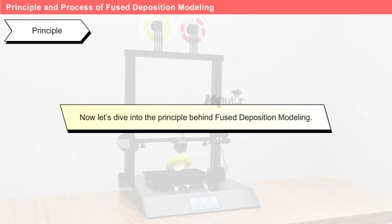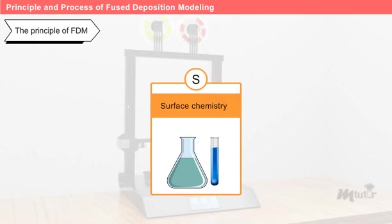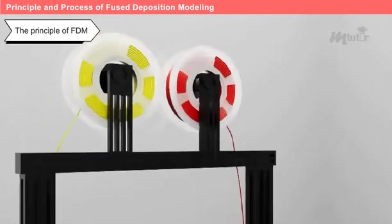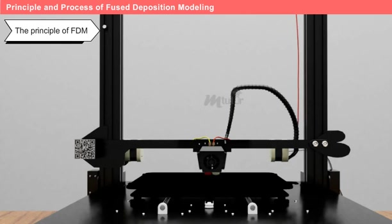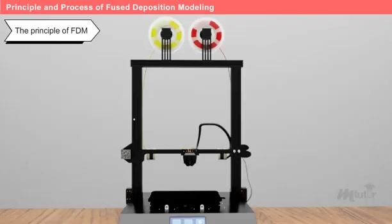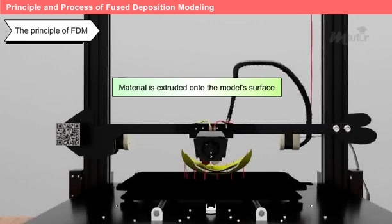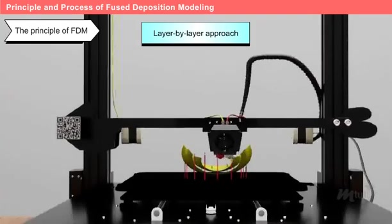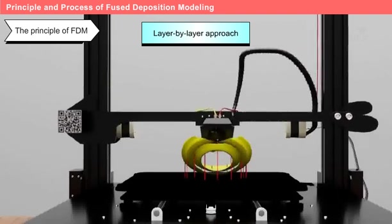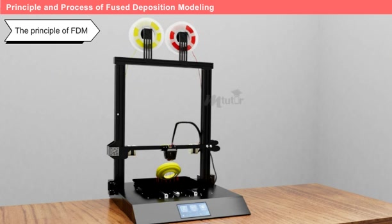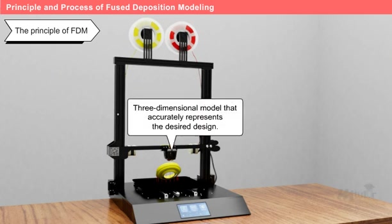The principle of FDM is based on three key elements: surface chemistry, thermal energy, and layer manufacturing technology. The process begins with the material, typically in filament form, which is loaded into a specially designed head. Inside the head, the filament is melted, and the molten material is extruded onto the model's surface. As it is extruded, it is cooled and solidifies to form the model. This layer-by-layer approach allows the model to be built up gradually, similar to how other rapid prototyping systems operate, resulting in a three-dimensional model that accurately represents the desired design.